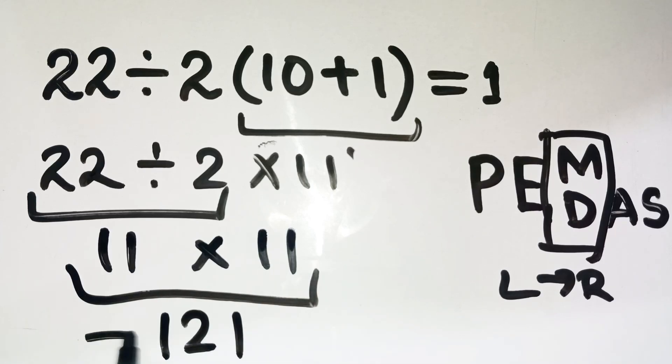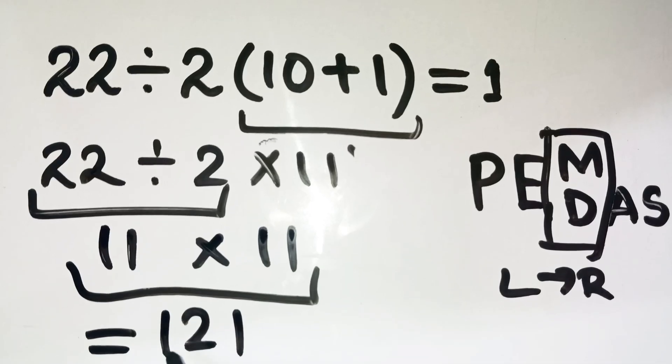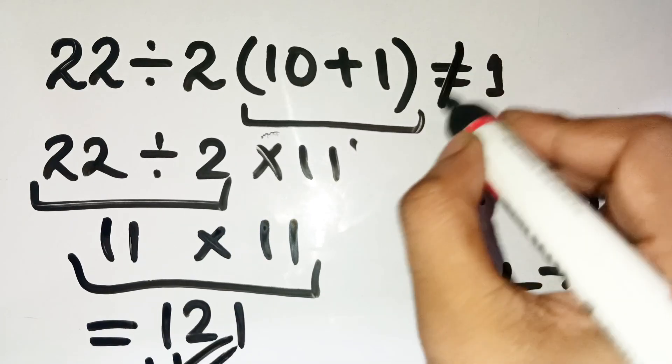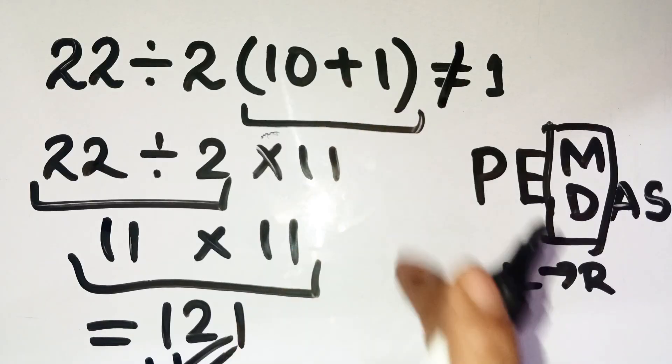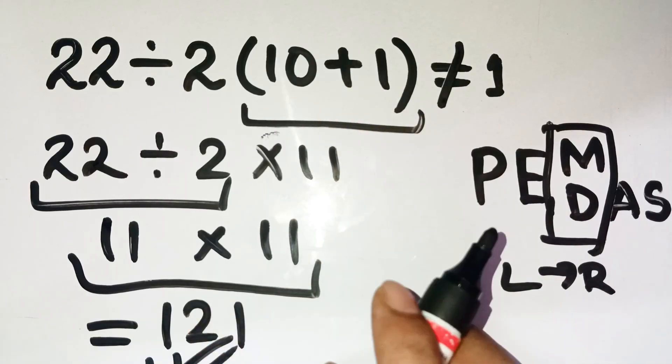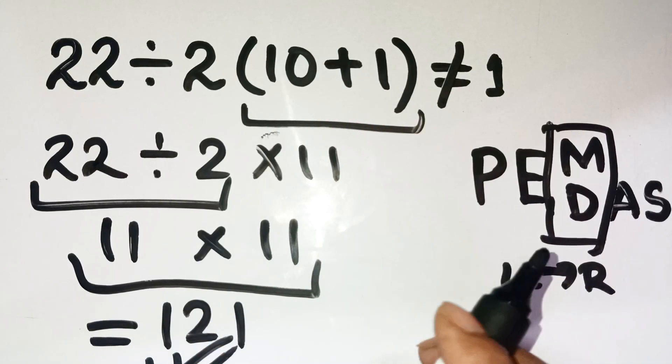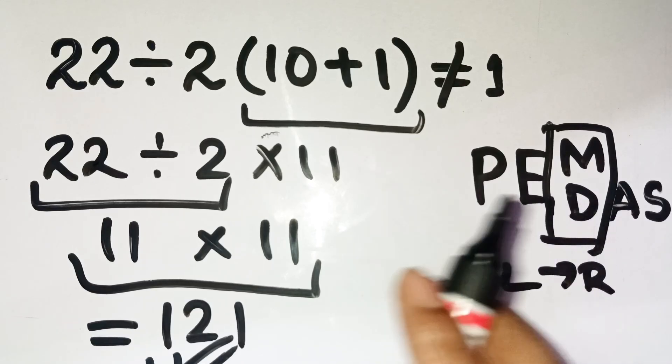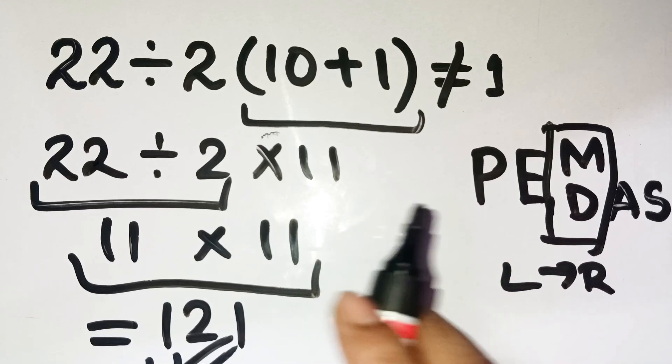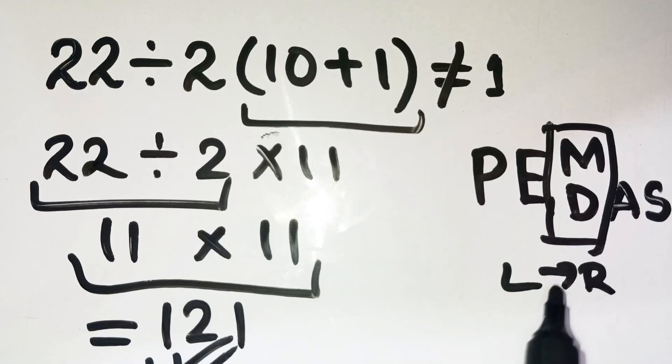So, the correct answer, the real one, is 121, not 1. Crazy, right? It's such a simple-looking problem, but it perfectly exposes how easily people forget that division and multiplication share equal priority. It's not PEMDAS, where multiplication always comes before division. It's actually PEMDAS with left to right for equals.